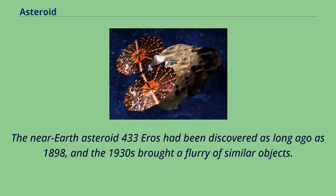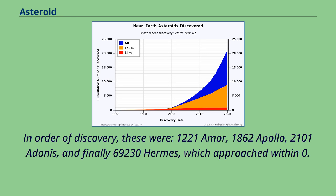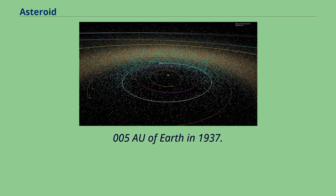The near-Earth asteroid 433 Eros had been discovered as long ago as 1898, and the 1930s brought a flurry of similar objects. In order of discovery, these were 1221 Amor, 1862 Apollo, 2101 Adonis, and finally 69230 Hermes, which approached within 0.005 AU of Earth in 1937.